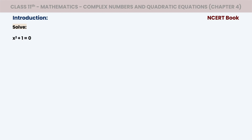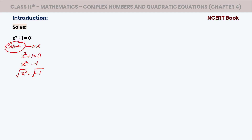Students, have you tried to solve these equations? In Class 10, we studied that if we have x² + 1 = 0, we need to find the value of x. How to start? x² + 1 = 0 gives x² = −1. Now, to solve for x, we take the root on both sides and we get x = √(−1).